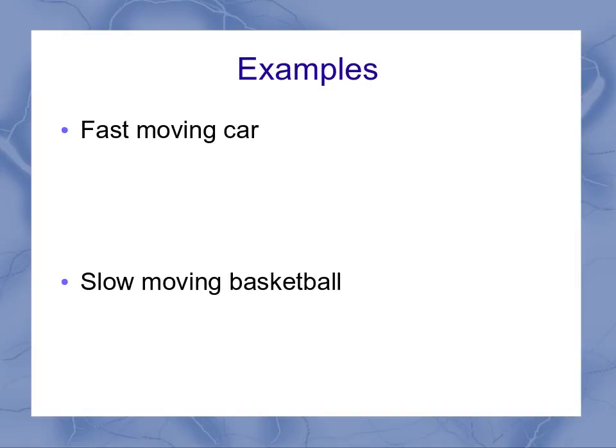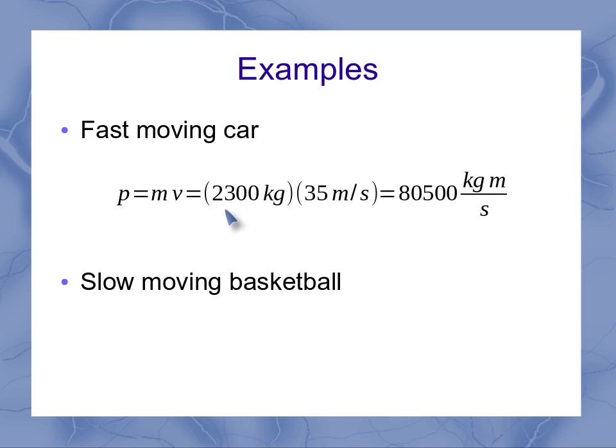Here's some quick examples. I'm going to start with two of them. First would be for a fast moving car. In this case, you have a fairly large mass of probably something over 2,000 kilograms. This might be a typical value for a car. And here are 35 meters per second. And that's somewhere around typical highway interstate speeds. And so that gives us a fairly large momentum of 80,500 kilogram meters per second.